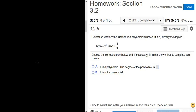Determine whether the function is a polynomial function. If it is, identify its degree. The function we have is h(x) = 7x^4 + 6x^3 + 4/x.